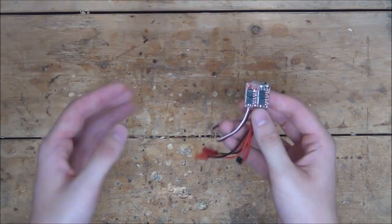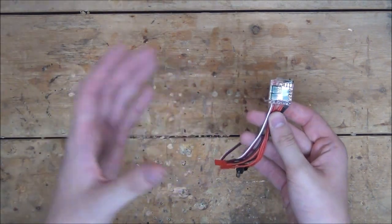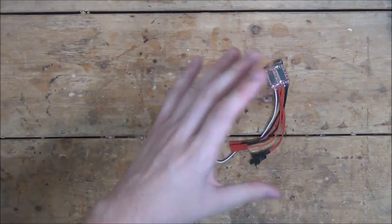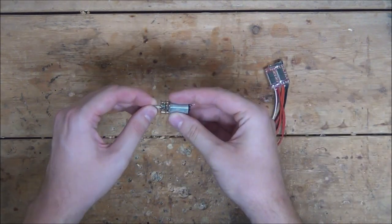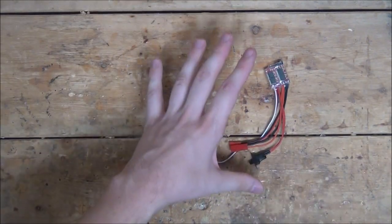Here I have an ESC. Now, ESC stands for Electronic Speed Controller. What it does is, as the name implies, it helps control the speed of your motor. It does do a few other things, but we'll touch on those later.